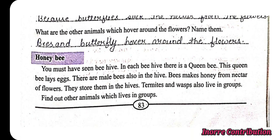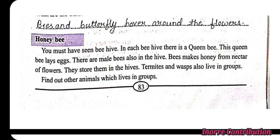In each beehive there is a queen bee. This queen bee lays eggs. There are male bees also in the hive. Bees make honey from nectar of flowers and store it in the hives. Termites and wasps also live in groups. Find out other animals which live in groups — animals such as ants are also social animals which live in groups.